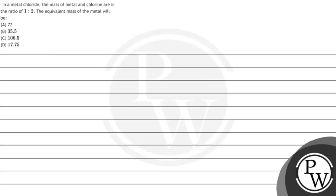Hello, let's read the given question. In a metal chloride, the mass of metal and chlorine are in the ratio of 1:2. The equivalent mass of the metal will be: option A: 77, option B: